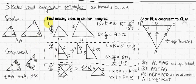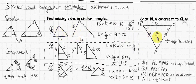There are actually two different types of exam questions: one for similar triangles and one for congruent triangles. Similar triangle questions basically ask you to work out the length of a missing side by comparing the triangles. Congruent triangle questions ask you to prove that two triangles are congruent, or find a missing angle based on congruence.